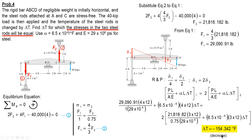The answer is negative 154.342 degrees Fahrenheit. This is a decrease in temperature. Delta T represents the change in temperature, so it could be an increase or a decrease. In this case, it is a decrease in temperature. That's it — I hope you learned something from this video.